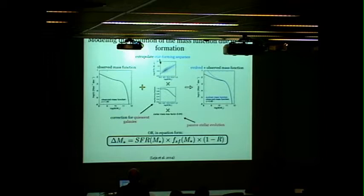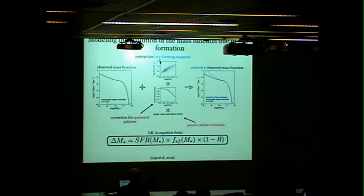We started with a very simple model. You take the observed mass function, grow it with the star formation sequence, extrapolate both to low stellar masses, modulate the growth by the fraction of star forming galaxies, and include a correction for passive stellar evolution. Then you compare the observed evolution to the predicted evolution.